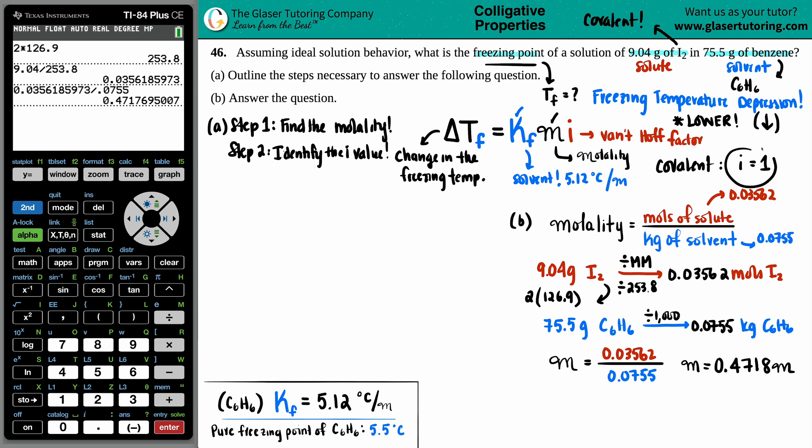Now just know that for your covalent compounds, your i value is always going to be a one. That one basically means that you have one whole I2 that is in the benzene. This is not going to break down into two I's, right? I and I. You only have to break it down when you have ionic compounds. But since this is a covalent, we're going to assume that the I2 is just being held together and the i value is one. So that checks out.